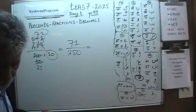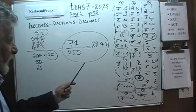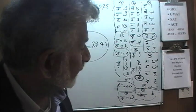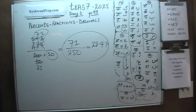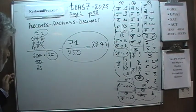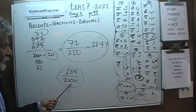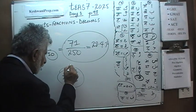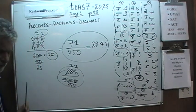So 28.4 percent expressed as a fraction is 71 over 250. In the exam, if they ask you to express 28.4 percent as a fraction, 71/250 would be the correct answer. The unreduced form 284/1000 is technically correct but won't appear as an answer choice — you have to reduce it. Alternatively, you could divide top and bottom by 4 in one step: 284 divided by 4 is 71, and 1000 divided by 4 is 250. Same result.